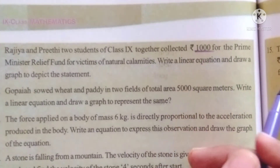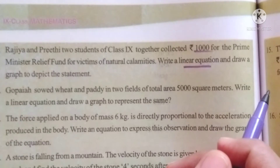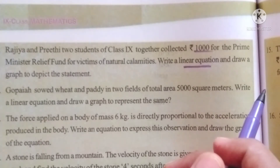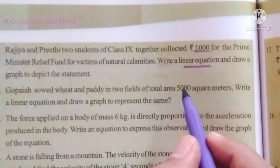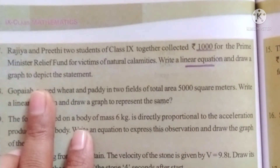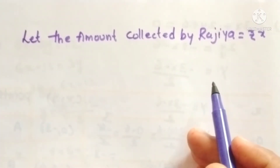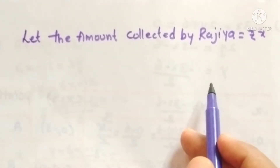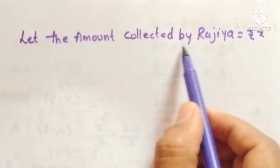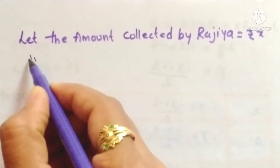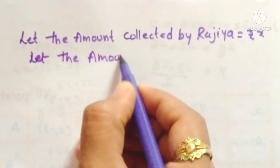First of all we have to write the linear equation, just as we wrote in exercise 6.1. After forming a linear equation we have to draw the graph. We don't know how much money Rajia collected and how much money Preeti collected, so let the amount collected by Rajia be rupees X, and similarly let the amount collected by Preeti be Y rupees.